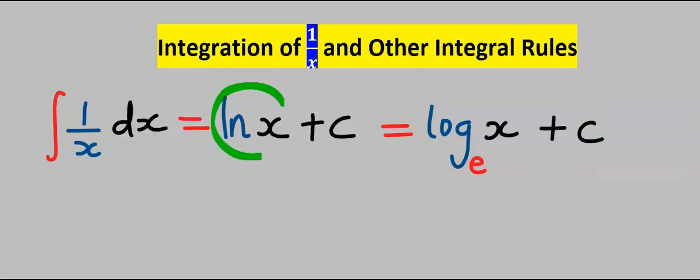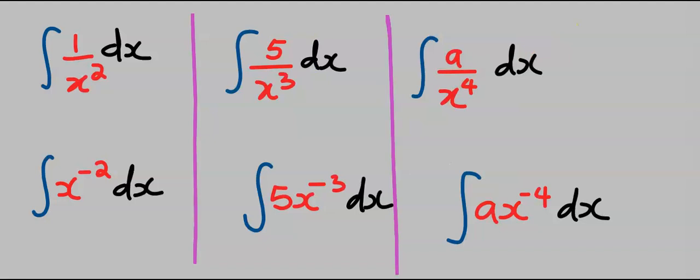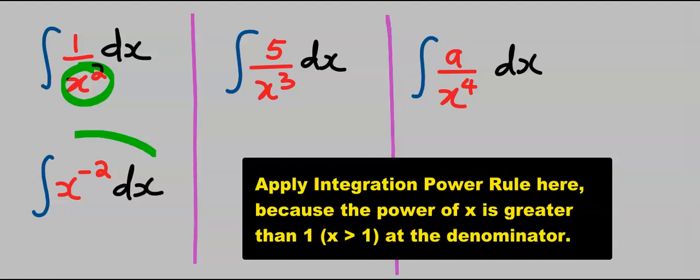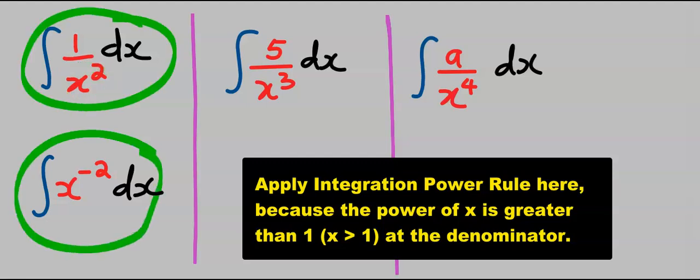The natural log of x is the same thing as log x of base e. Subsequently, if the x at the denominator has a power which is greater than one, then we can rewrite this. Both are the same.